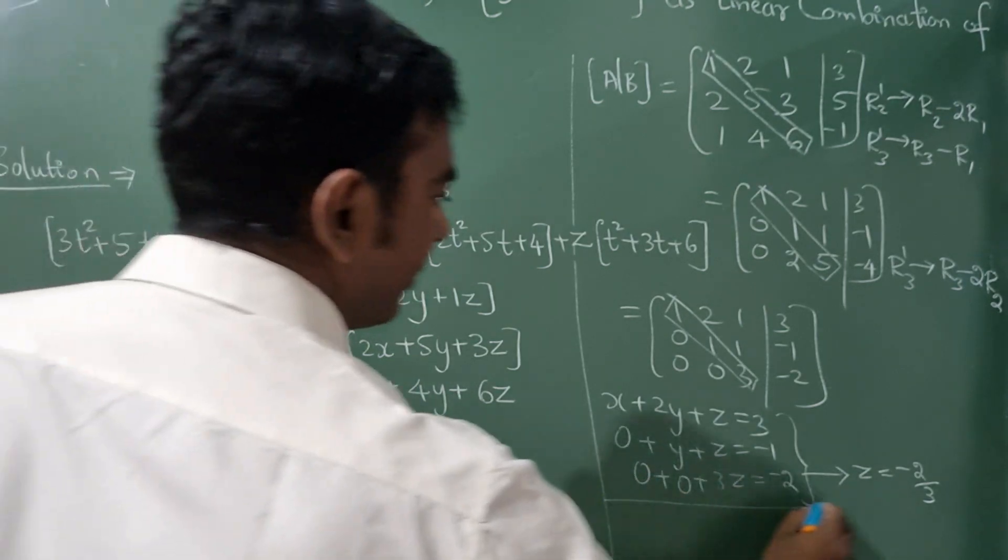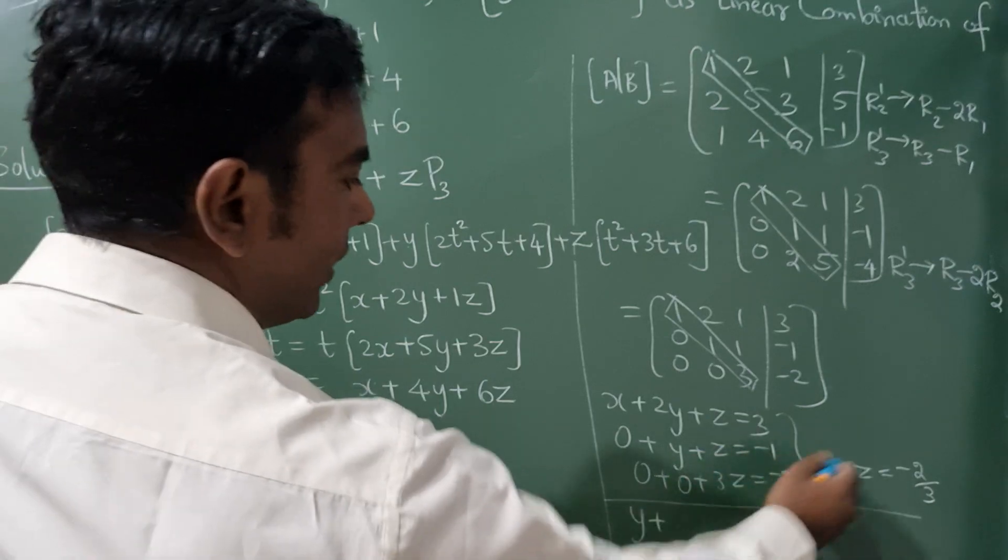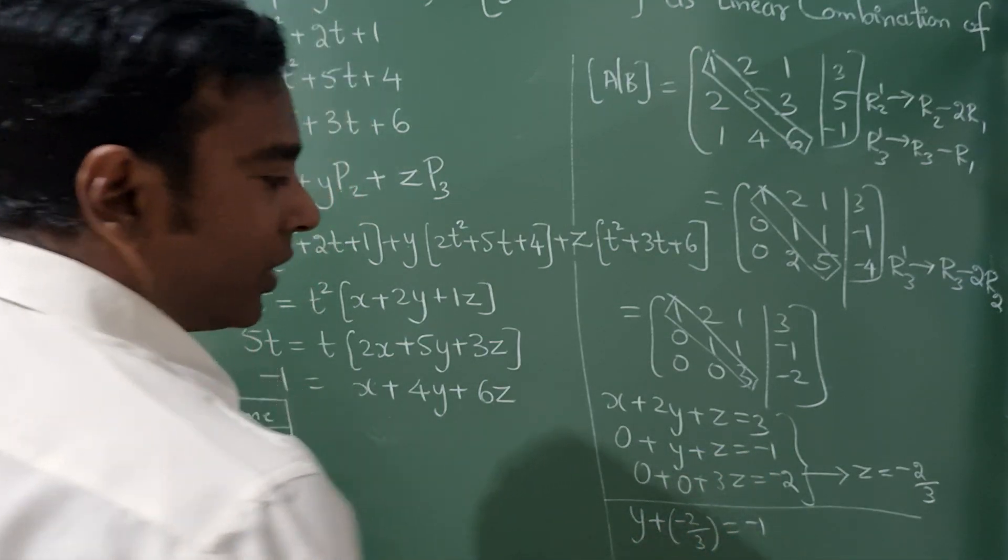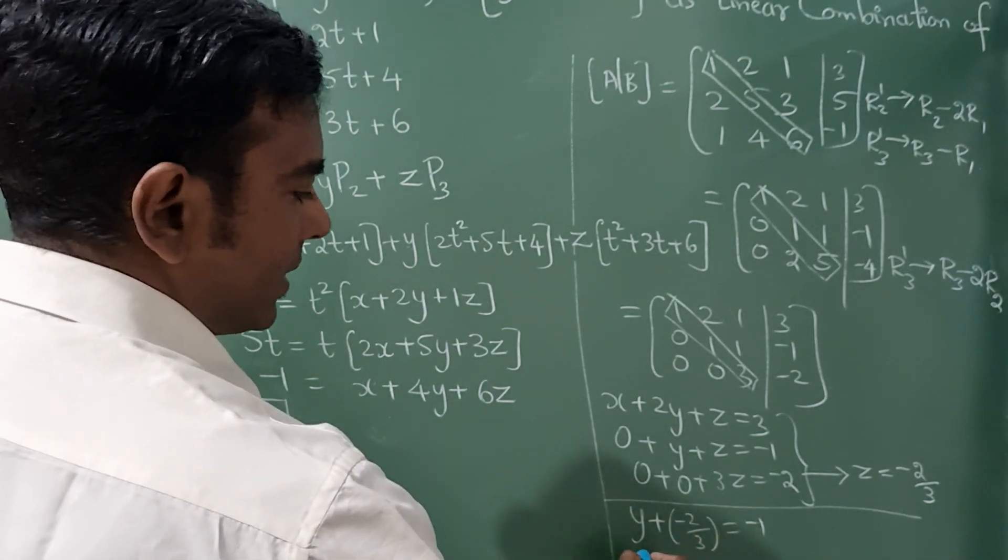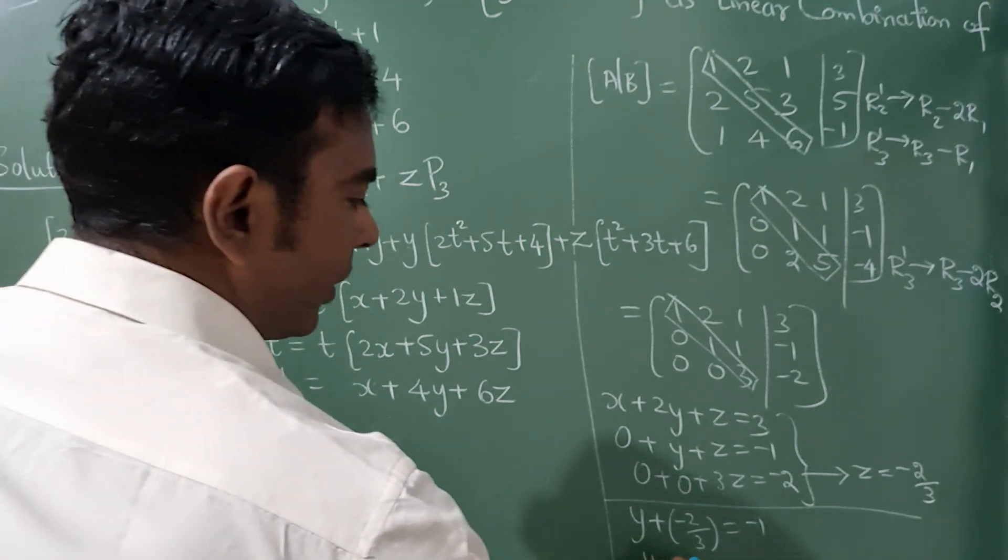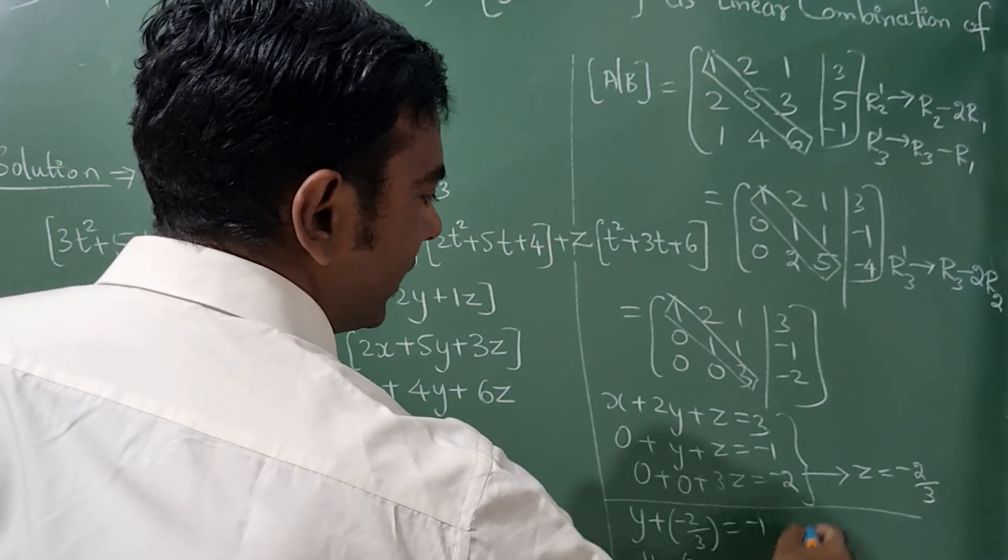Now y, to find this y. Y plus z value is -2/3 equals -1. Now if you take this on the right hand side, it will become plus. So y = 2/3 - 1 will become -1/3.